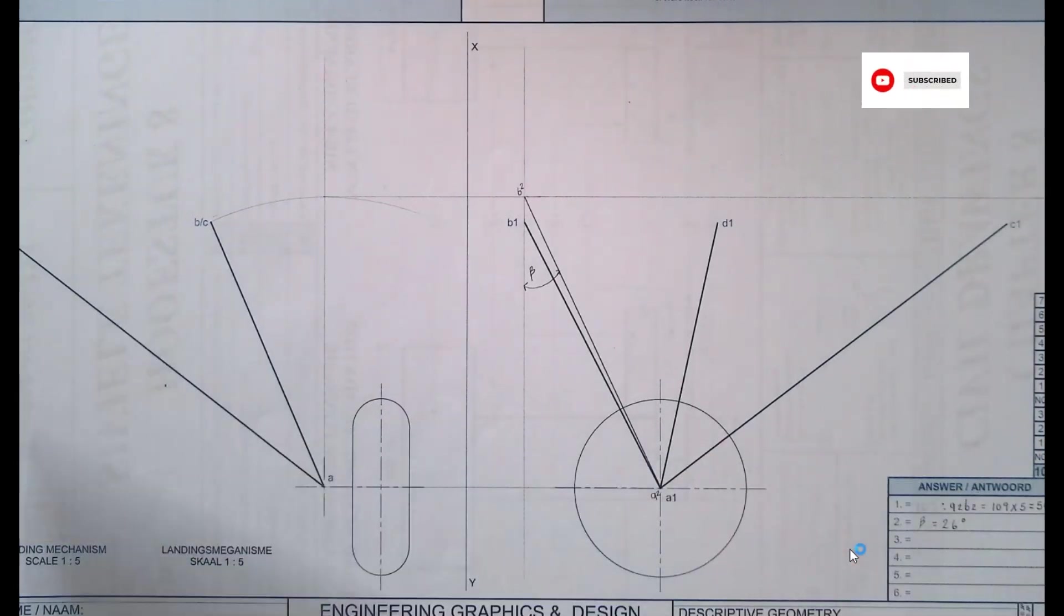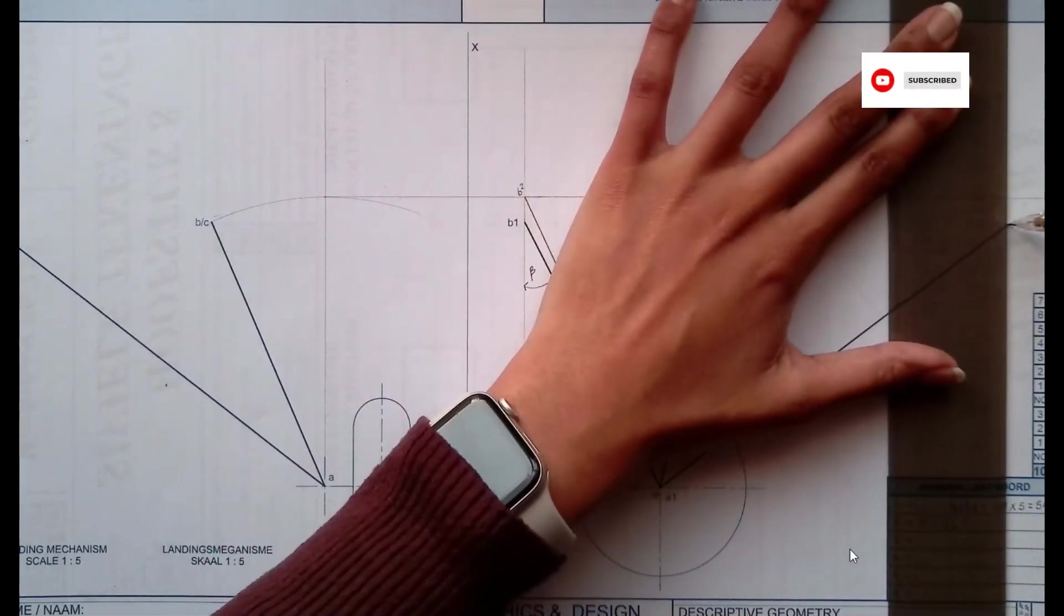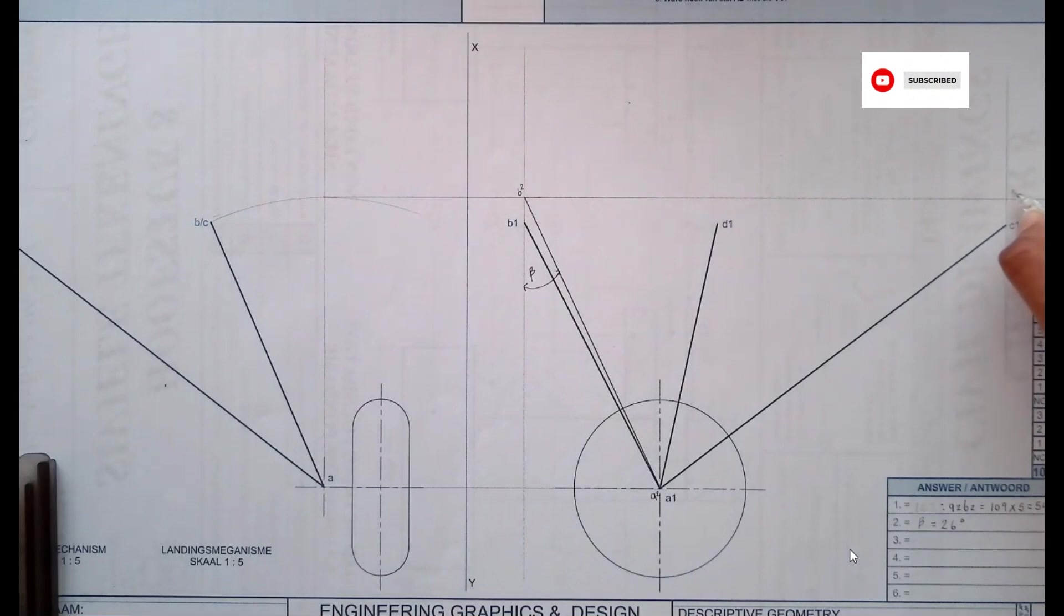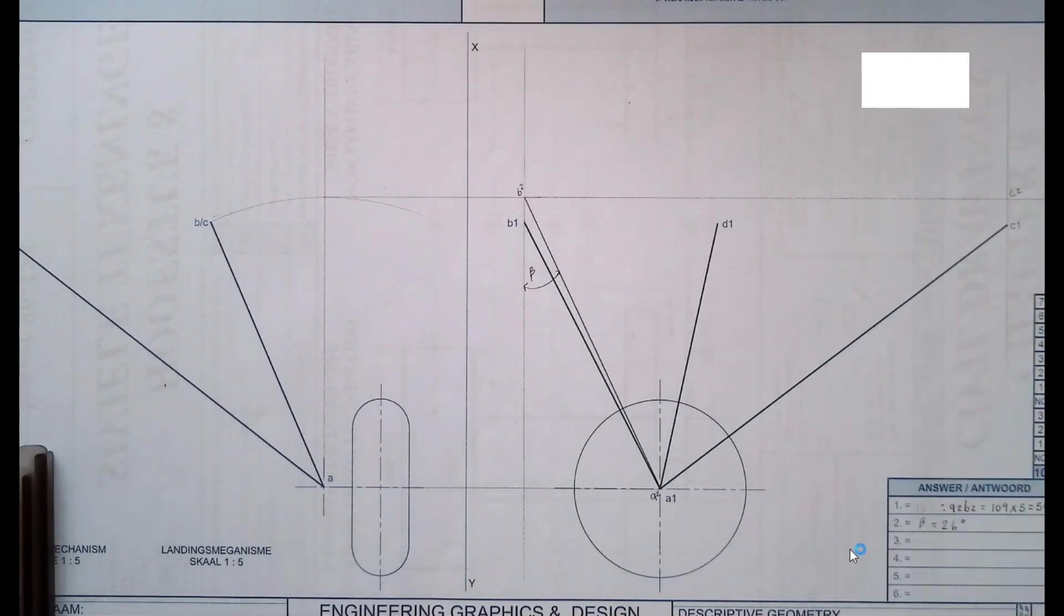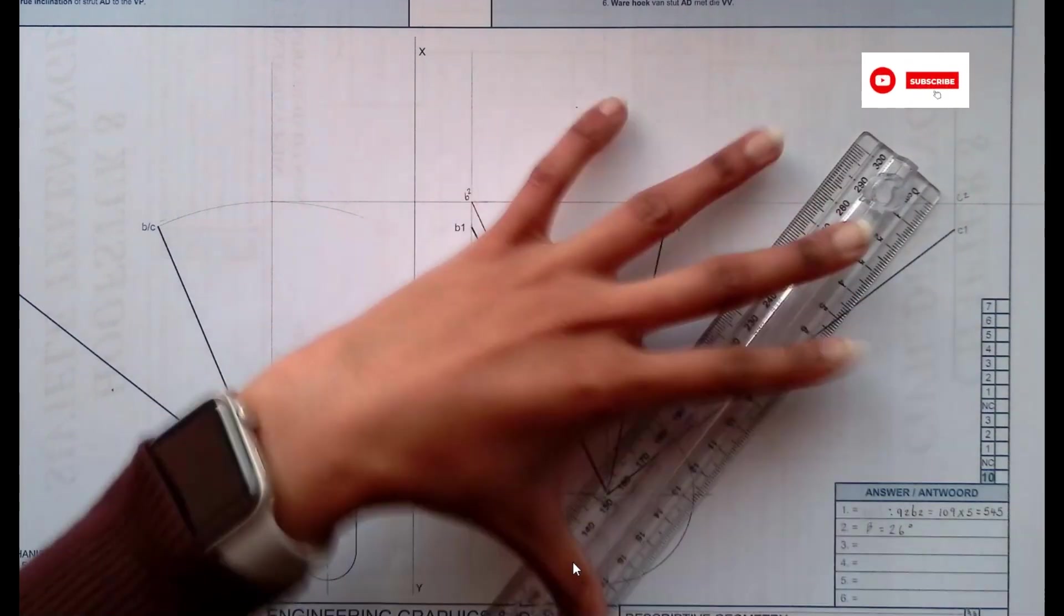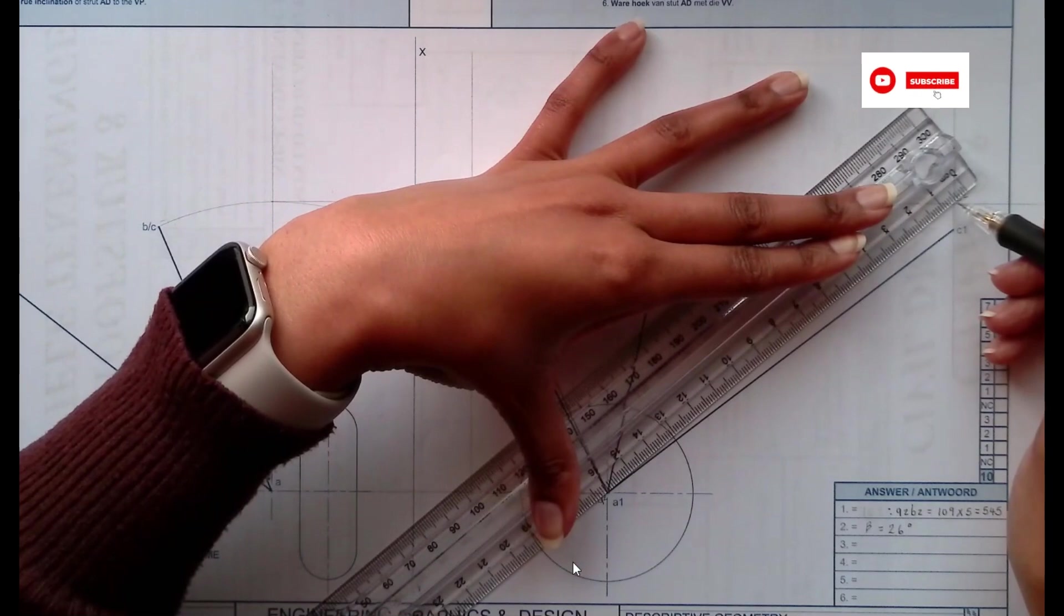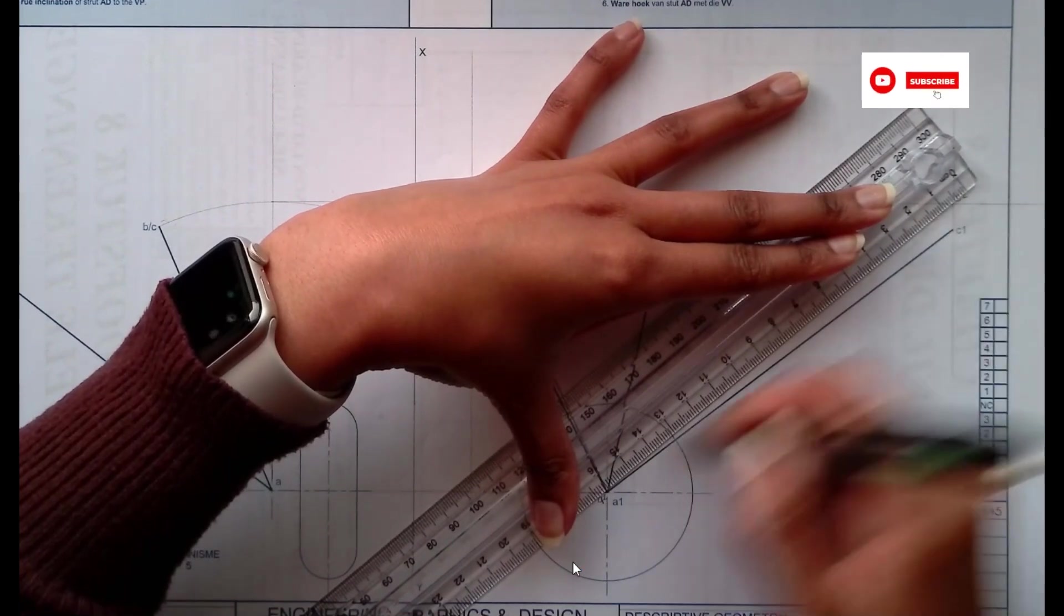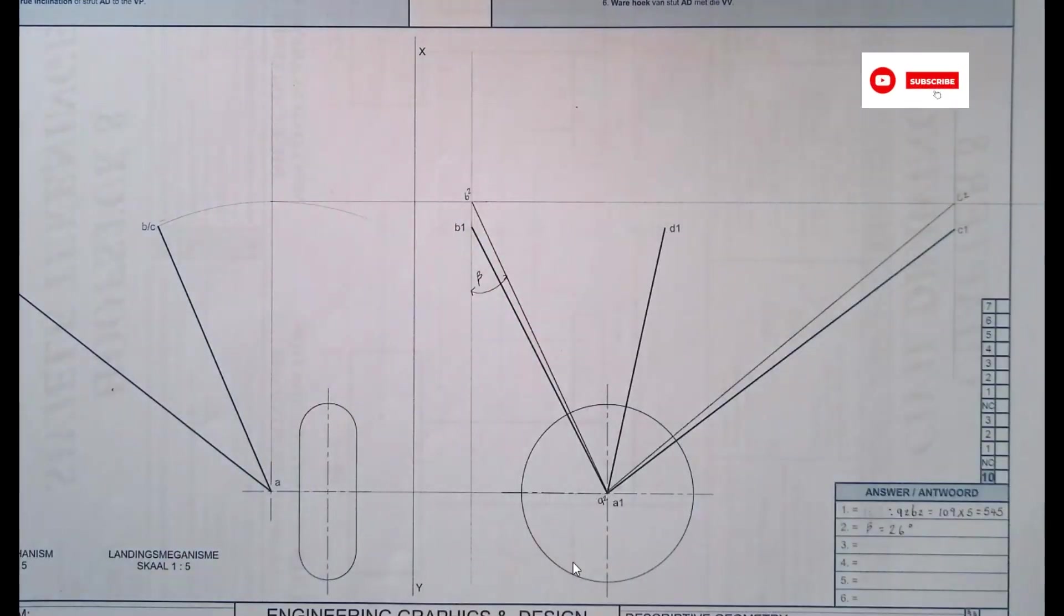Extending that point. And then now that means this is going to be my C2. Remember A2 has already been brought here. So now I have C2 that I will then join with A2. So C2 will be joined with A2. Then you want to try to be as accurate as possible. Draw your line, which is line A2, C2.